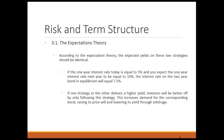According to the pure expectations theory, the average expected yield on these two strategies should be identical. If the one-year interest rate today is 5% and you expect the one-year interest rate next year to be 10%, then the interest rate on a two-year bond today should be 7.5%. If one strategy promises a higher yield than the other, investors would only follow that strategy, which would drive up the price of the involved bonds, therefore reducing yields through arbitrage.